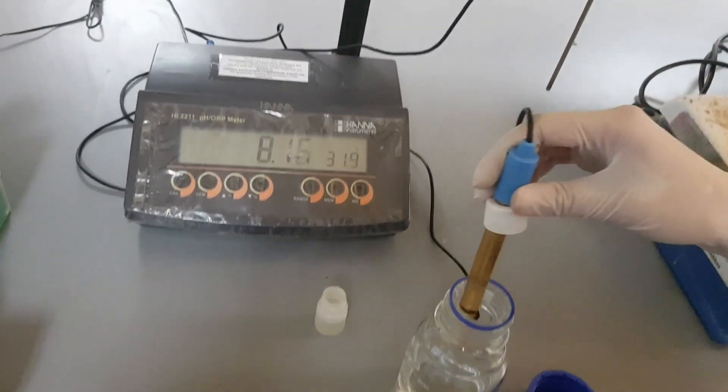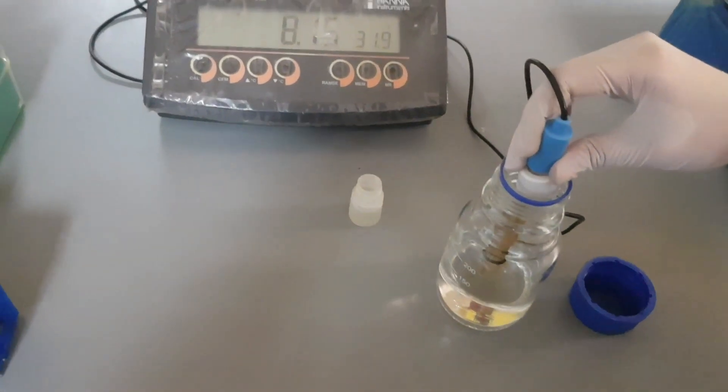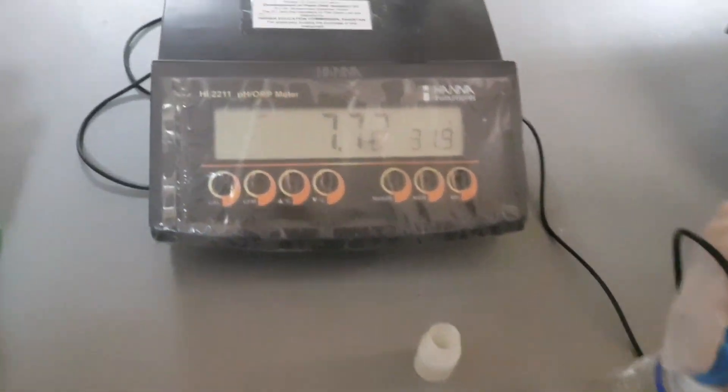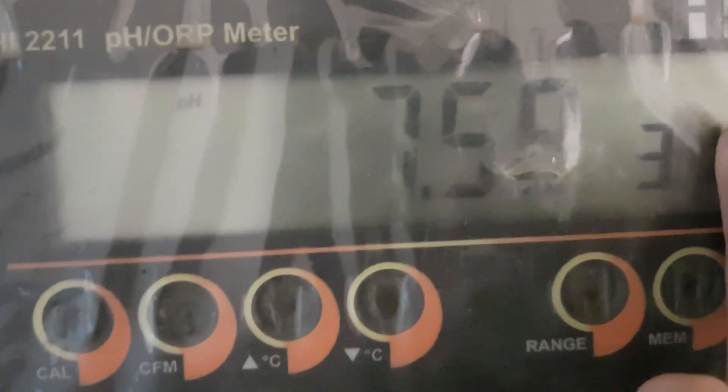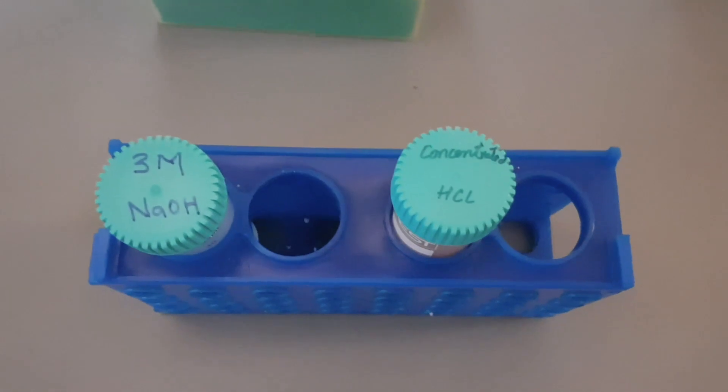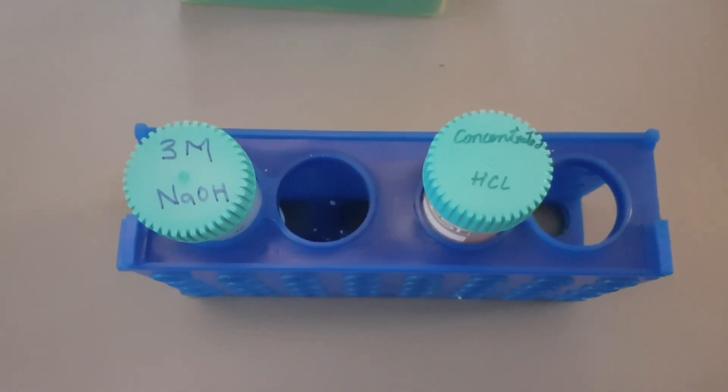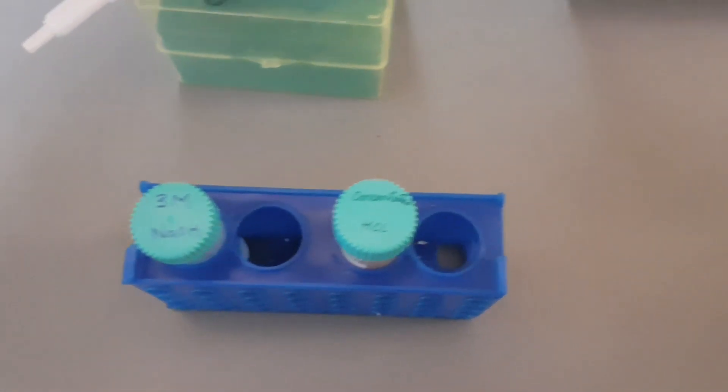By using a pH meter, now set the pH of the solution to 7.5 to 7.6. You may use concentrated HCl and 3 molar NaOH to set the pH.